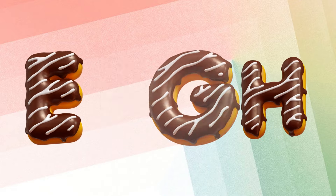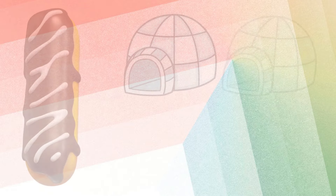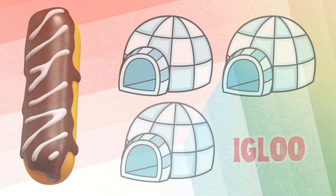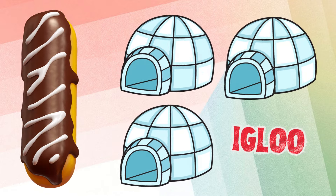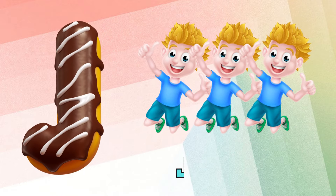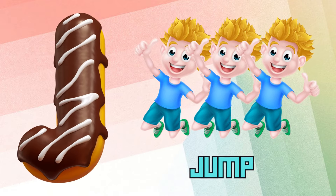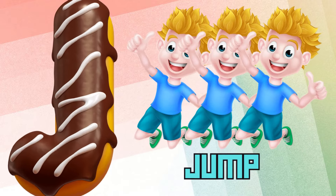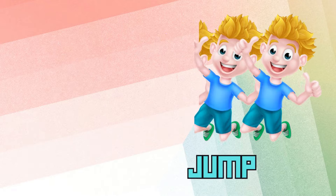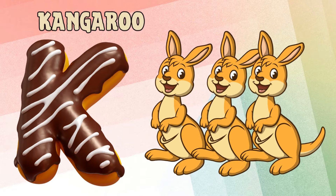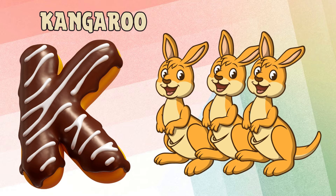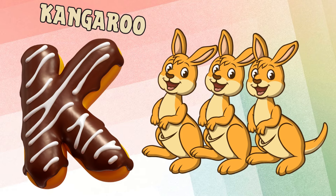I is for igloo, i-i-igloo. J is for jump, j-j-jump. K is for kangaroo, k-k-kangaroo.